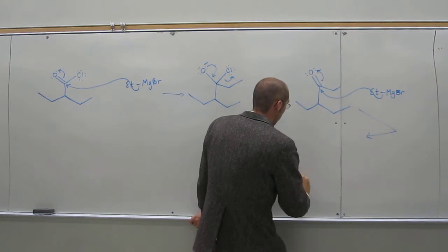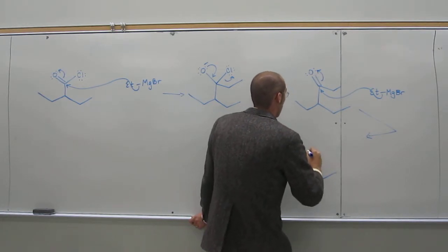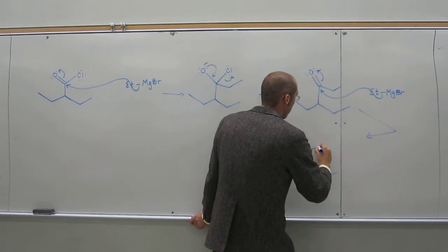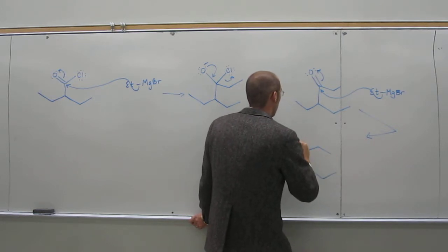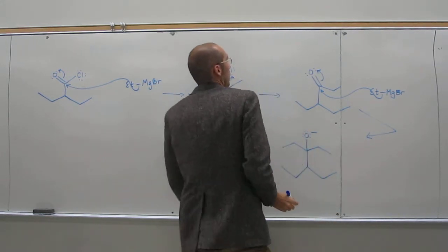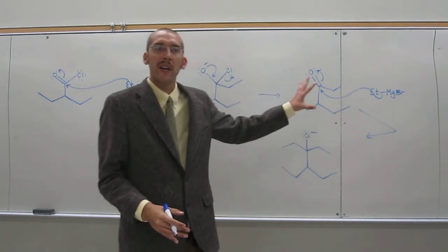So we're going to get, of course, not the alcohol yet, but the tertiary alkoxide because Grignard reagents make a basic solution.